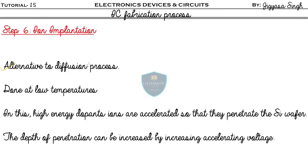Step six, ion implantation, is an alternative to the diffusion process. While diffusion is performed at high temperature, ion implantation is done at low temperature. In this process, high-energy dopant ions are accelerated so that they penetrate the silicon wafer. The depth of penetration is controlled by the accelerating voltage — increasing the accelerating voltage increases the depth of penetration.